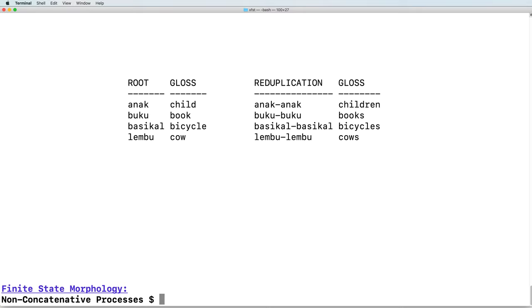On the left, we have four noun roots: the words for child, book, bicycle, and cow.